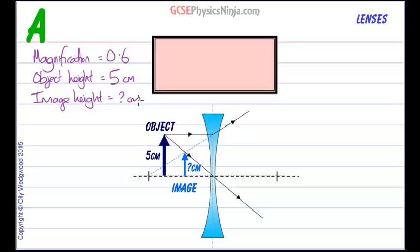That's going to come out in centimeters to match the object height units. The formula is that magnification equals image height divided by object height.